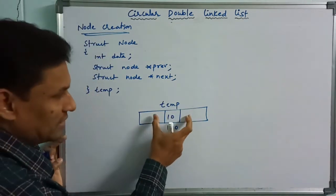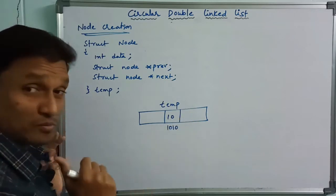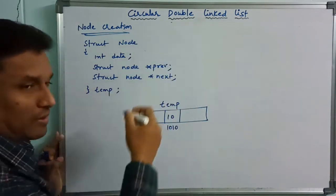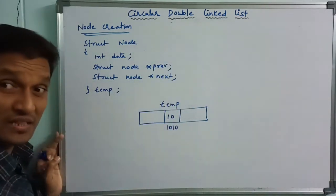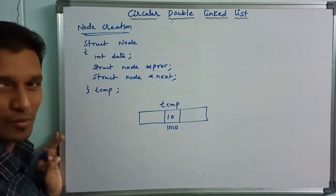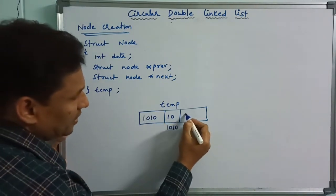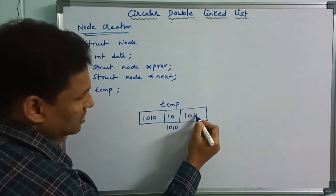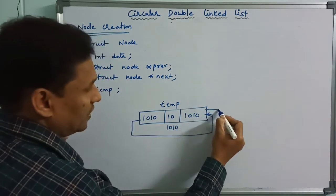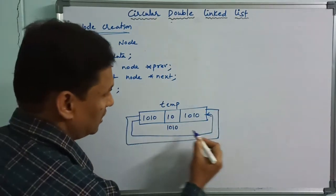What about both links — the previous link and the next link? When we use a circular double linked list with only a single element, the previous link and next link both point to that same node itself.